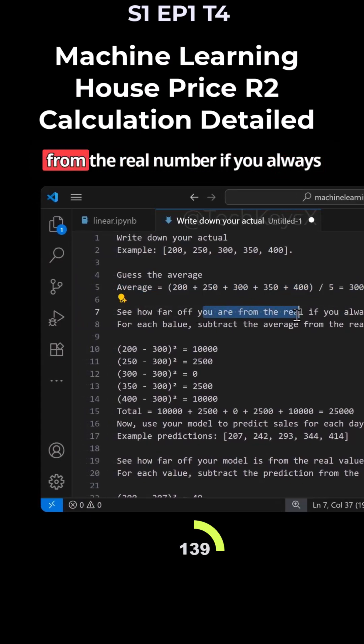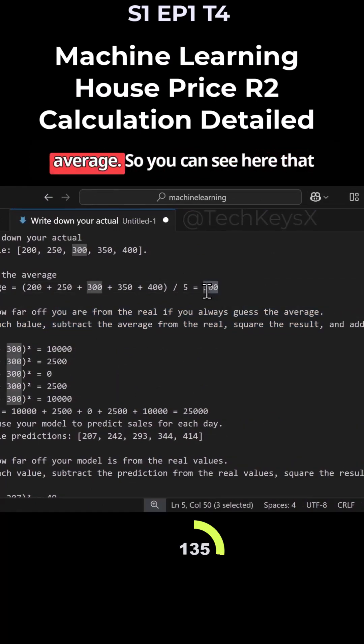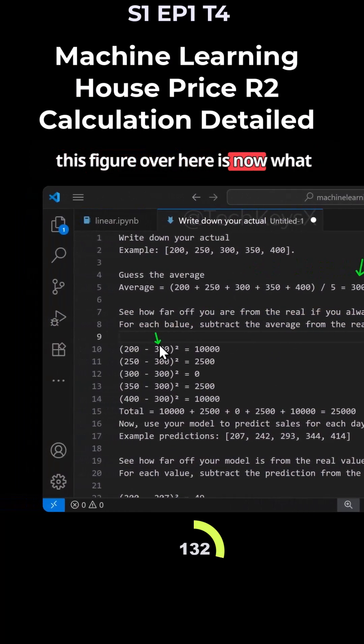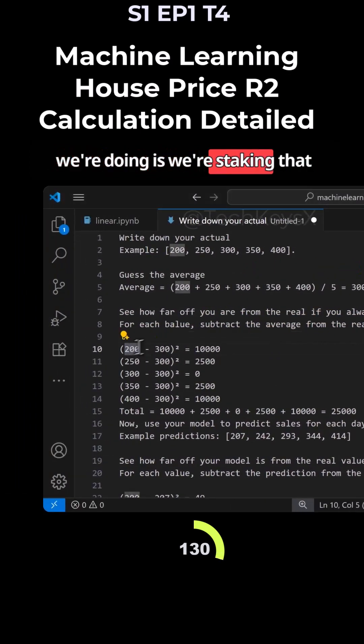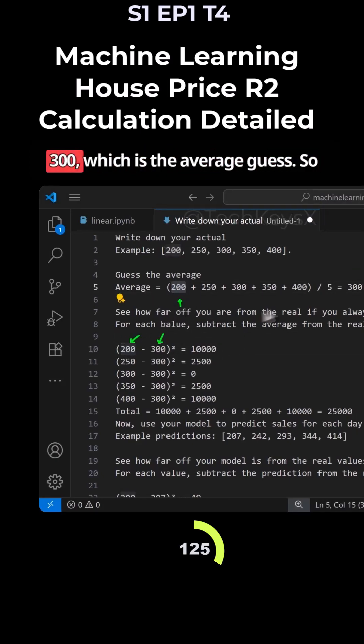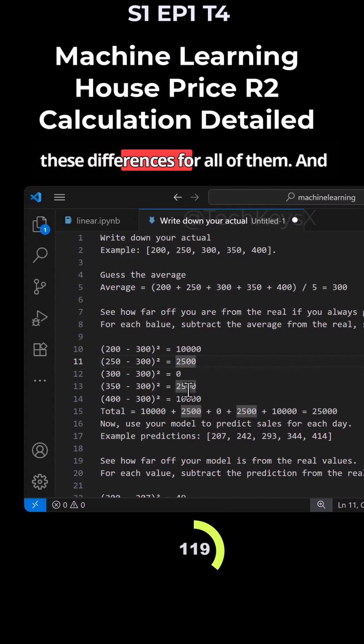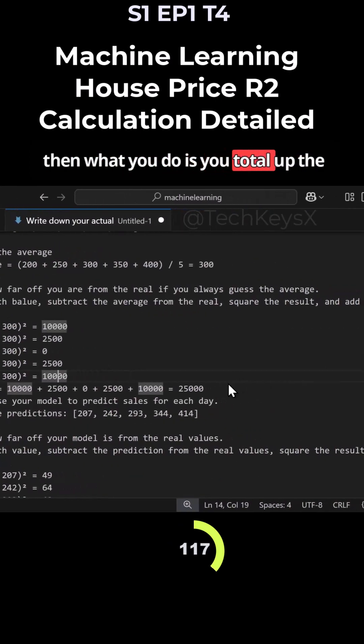Then see how far you are from the real number if you always guess the average. So this is the average, this figure over here. Now what we're doing is we're taking that individual house price. So in this case 200, 200 here minus 300 which is the average guess. So this is the average price and then you get this difference, and you get these differences for all of them. And then what you do is you total up the differences.